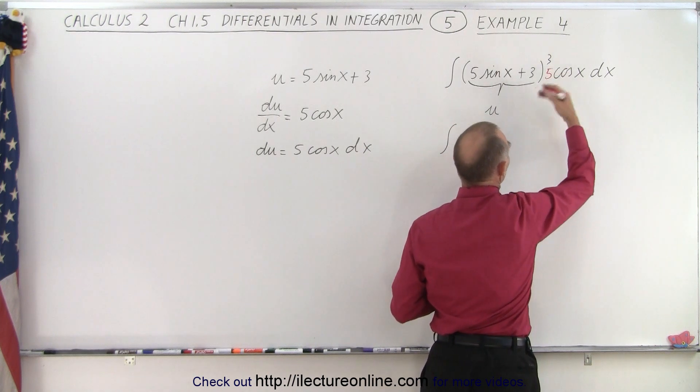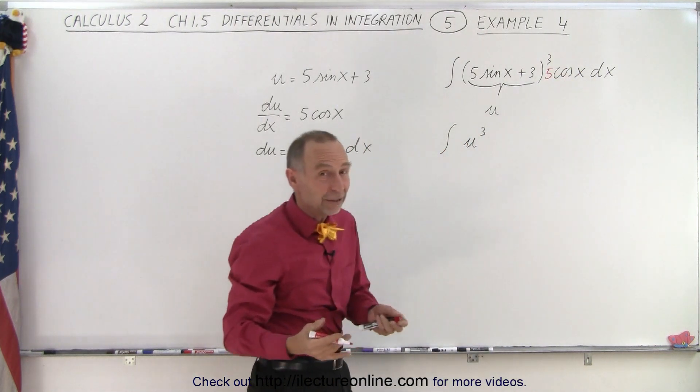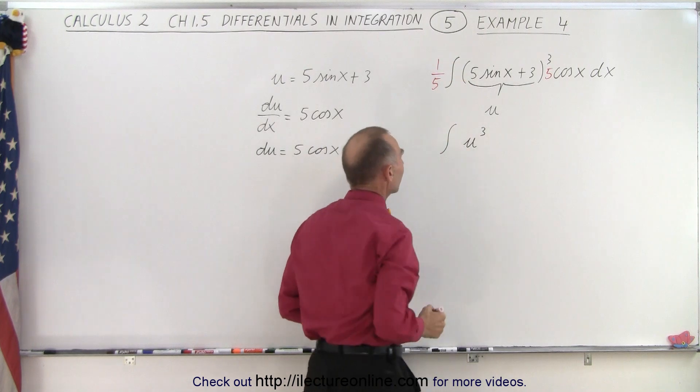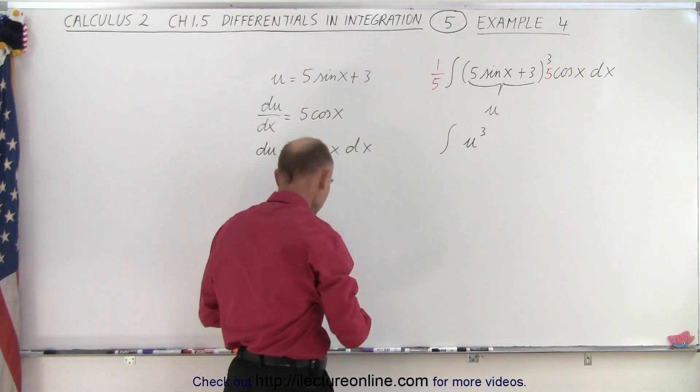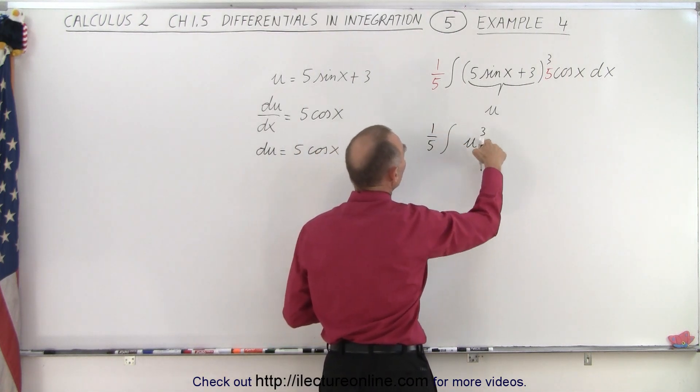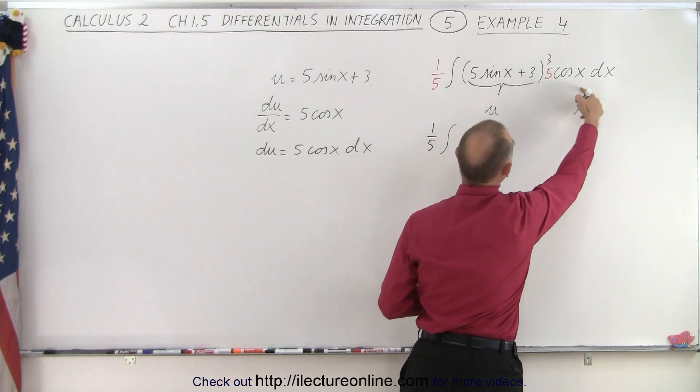And of course, when I multiply the integrand by 5, I need to divide by 5, so I didn't change anything, put a 1 fifth in front of that. Now I can say that I have a 1 fifth u cubed times du.